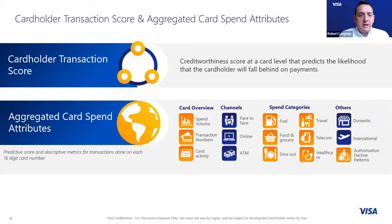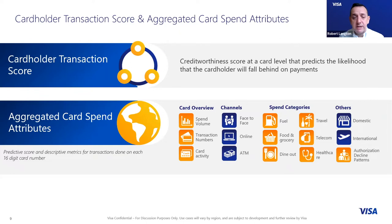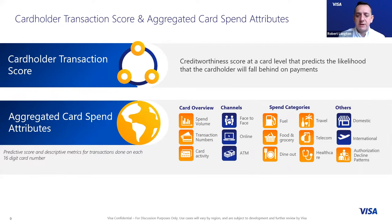Getting into the solutions in more detail, the two products we've brought to market are the cardholder transaction score and aggregated card spend attributes. The cardholder transaction score is a probability of default score — we look at the previous 12 months of transactional data to predict the likelihood of credit default in the coming 12 months. Credit default here means 60 days plus missed payments on a commitment. Initially we took the score to market as a sole product, but client feedback asked for more data, leading us to develop aggregated card spend attributes, breaking spend at a card level into categories: general spend volumes, number of transactions, card activity, spending habits, large cash withdrawals, lifestyle categories, and discretionary versus non-discretionary spend.